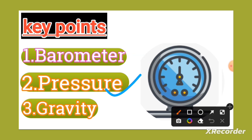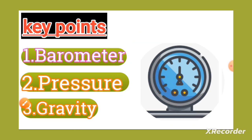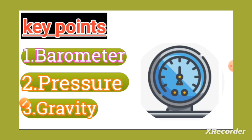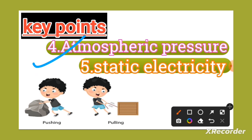Gravity is also written here. Suppose this is the Earth — everyone walks on the Earth because Earth attracts everything towards itself. Because of this attraction, it is known as gravity. Gravity is just a force of attraction between all masses, meaning all things present in the atmosphere.